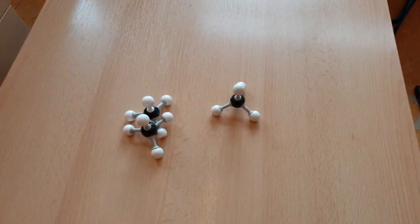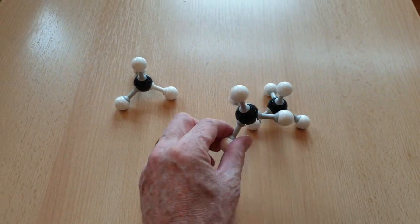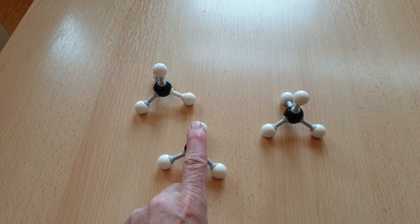What does a methane molecule have to do with an ancient weapon? These are methane molecules, they're tetrahedra. Whichever way you drop them, they always point upwards.